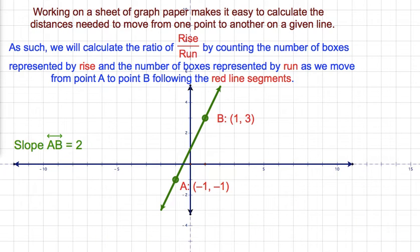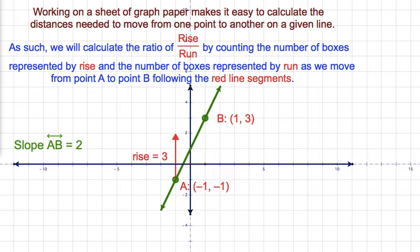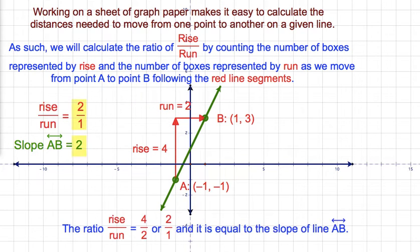Working on a sheet of graph paper makes it easy to calculate the distances needed to move from one point to another on a given line. As such, we will calculate the ratio of rise to run by counting the number of boxes represented by rise and the number of boxes represented by run as we move from point A to point B following the red line segments. The ratio of rise to run is equal to 4 to 2, or 2 to 1, and it is equal to the slope of line AB.